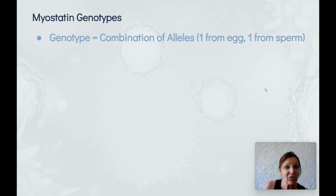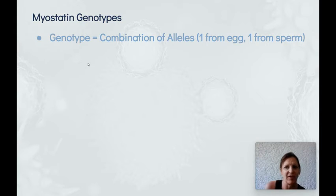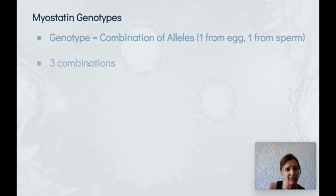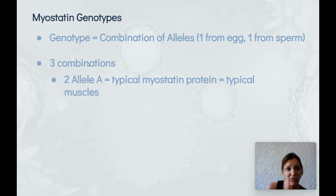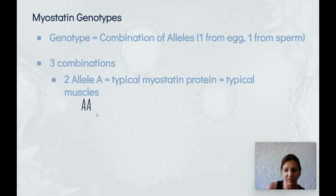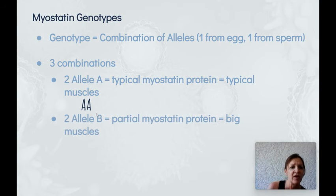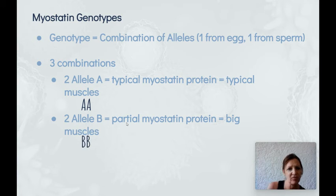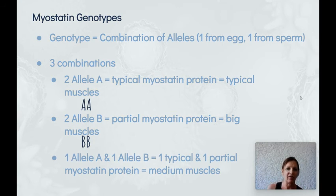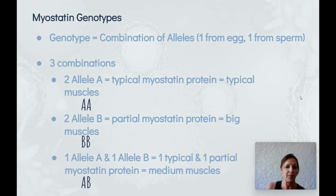When we look at what the alleles say in chromosomes, that is called a genotype. Phenotype is what the trait looks like, and genotype is what the actual alleles say. Remember, we get one allele from an egg and one from a sperm at fertilization. With myostatin alleles there are three combinations: two A alleles (AA) leading to typical myostatin proteins and typical muscles; two B alleles (BB) leading to partial myostatin proteins and extra big muscles; and one of each (AB) giving one typical and one partial myostatin protein, resulting in medium muscles.